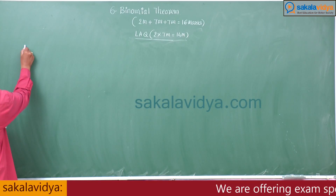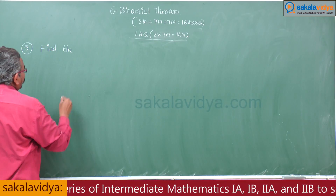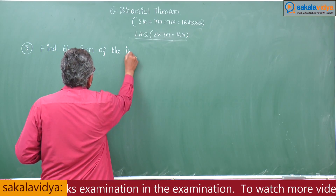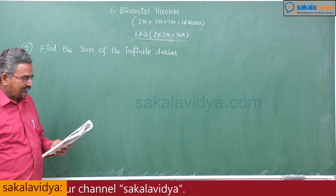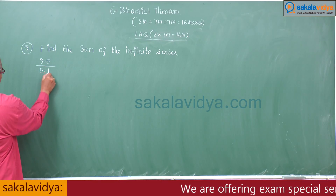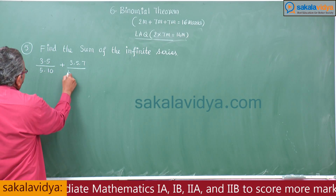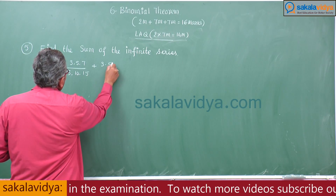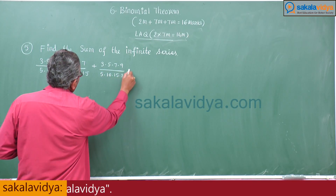Ok, fifth one. Find the sum of the infinite series 3·5/(5·10) + 3·5·7/(5·10·15) + 3·5·7·9/(5·10·15·20) + ... to infinity.